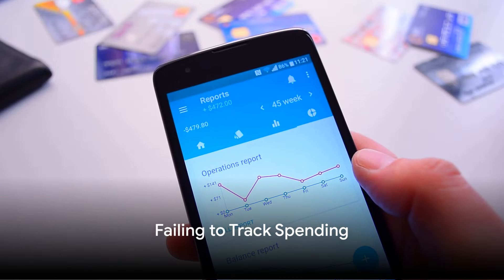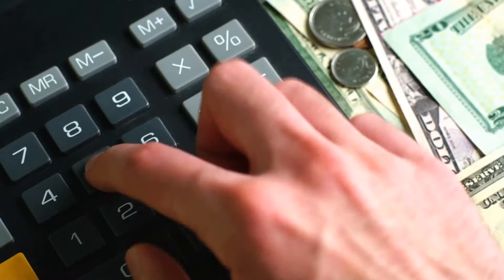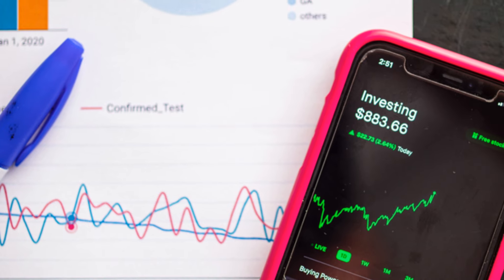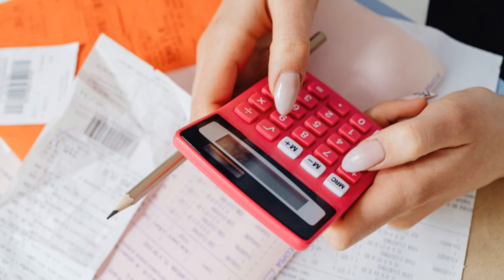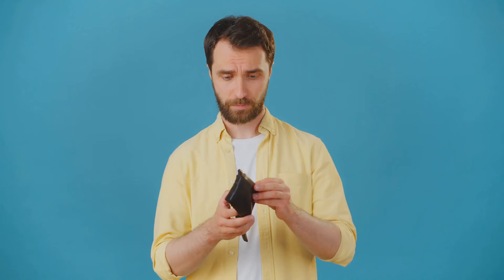Mistake number seven, failing to track spending. Imagine you're on a road trip without a map or GPS. It's easy to get lost, isn't it? The same principle applies to your financial journey. Keeping track of your spending is like having a financial GPS, helping you navigate towards your financial goals. Without it, you might find yourself in the middle of financial nowhere, wondering where your money went.